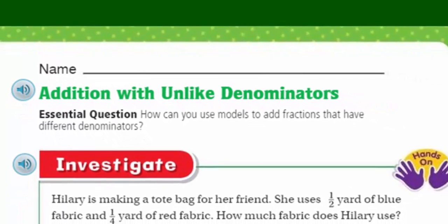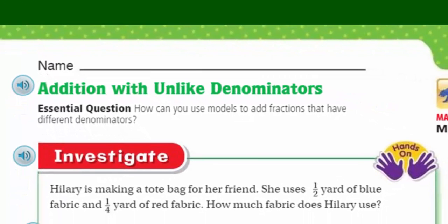We have investigate. So this is really a hands-on activity. See, we have our little purple hands. Hands-on. So let's go ahead and state the problem. It says that Hillary is making a tote bag for her friend. She uses one-half yard of blue fabric and one-quarter yard of red fabric.